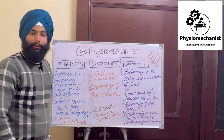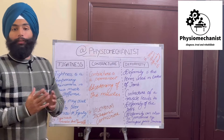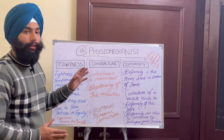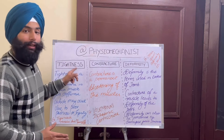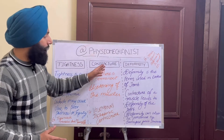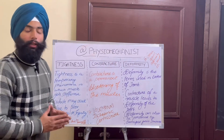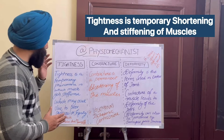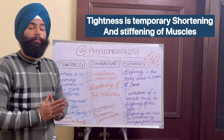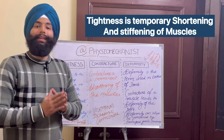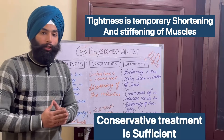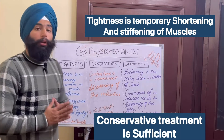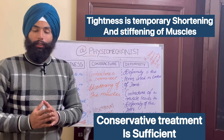Hi, I am Gursamil Singh Garoda, Physiotherapy Intern, and in this video I will discuss the difference among Tightness, Contracture, and Deformity. So what is Tightness? Tightness is defined as a temporary phenomenon in which muscles get stiffened or shortened, which may occur due to poor posture or injury.